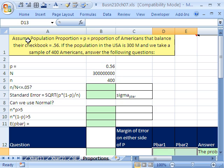Let's see our example. Assume the population proportion p, which is the proportion of Americans that balance their checkbook, is 0.56. If the population in the USA is 300 million and we take a sample of 400 Americans, answer the following questions. There's our N, that's the population of the United States, and we do a sample of 400.